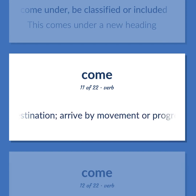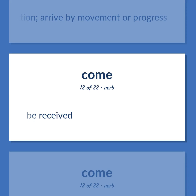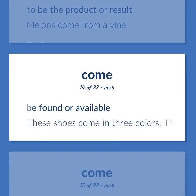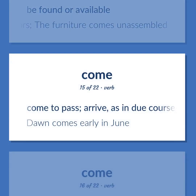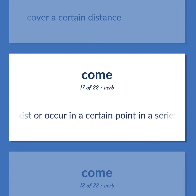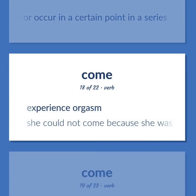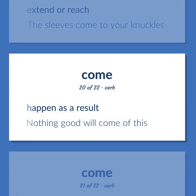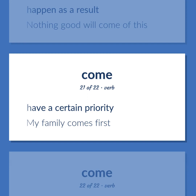Reach a destination; arrive by movement or progress. Be received. To be the product or result. Melons come from a vine. Be found or available. These shoes come in three colors; the furniture comes unassembled. Come to pass; arrive, as in due course. Dawn comes early in June. Cover a certain distance. Exist or occur in a certain point in a series. Experience orgasm. She could not come because she was too upset. Extend or reach. The sleeves come to your knuckles. Happen as a result. Nothing good will come of this. Have a certain priority. My family comes first.